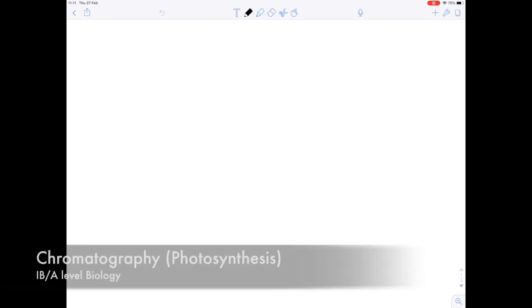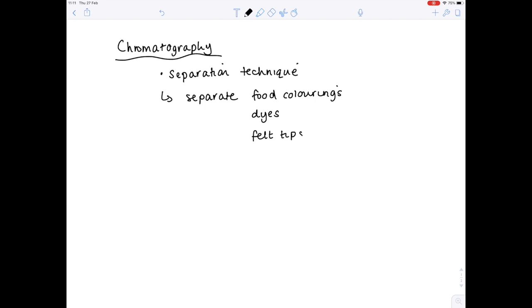In today's A-Level IB video, we're going to be talking about the process of chromatography. Although this is a biology video, hopefully you met chromatography if you studied GCSE or IGCSE chemistry. Remember that it was a separation technique used to separate food colorings and dyes. Because it can be used this way, we can also use it to separate photosynthetic pigments, and that's what we're going to be looking at in today's video: how we use chromatography to separate photosynthetic pigments.